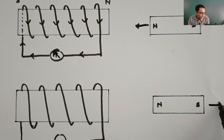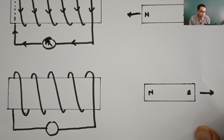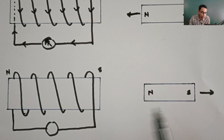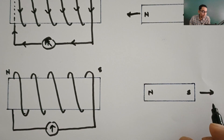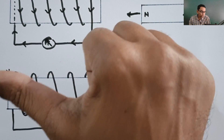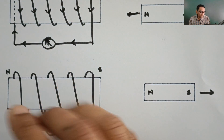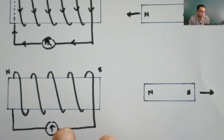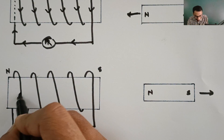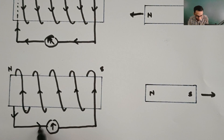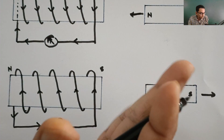Now, the North Pole of the bar magnet is going far away in this direction with respect to the coil. Here the South Pole will be created and here the North Pole would be created as per Lenz's law — then and only then will the motion of the bar magnet be opposed. Applying the right hand thumb rule, the thumb pointing towards the North, the water is flowing out of the vessel — rising up and flowing out like this. Finally, it would come out from here and the deflection would be in this direction.